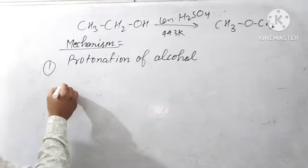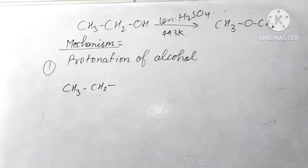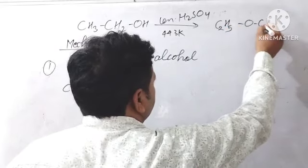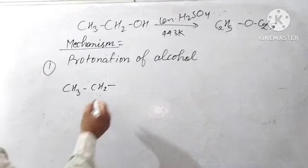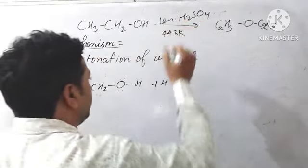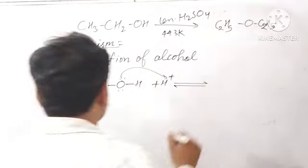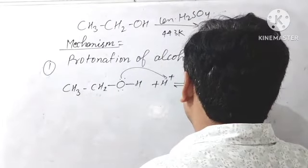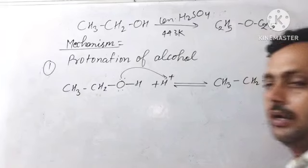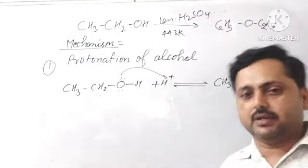Let me show this on the board. We are taking CH3-CH2-OH. Now for protonation, we will see this is the protonation step, and we get the proton from dissociation of H2SO4. This gives us the protonated species.